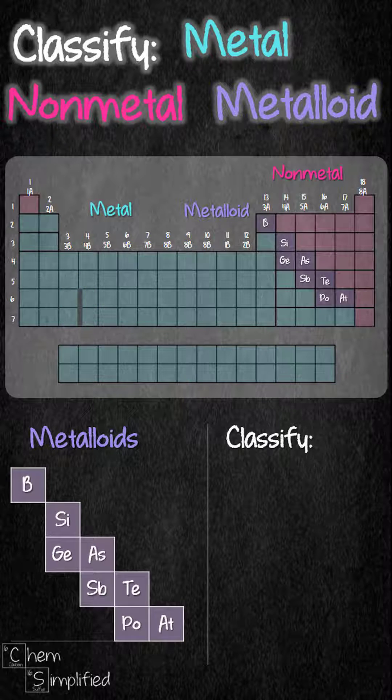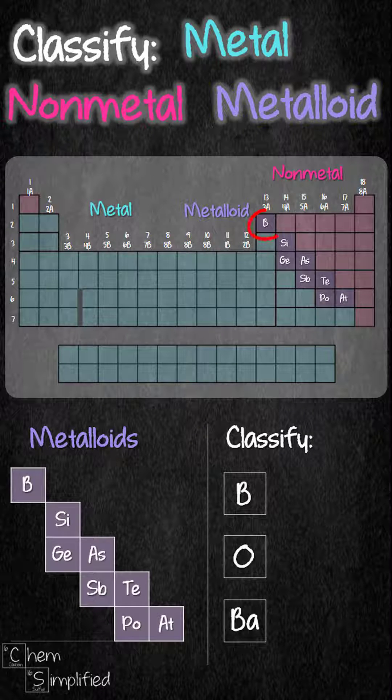Let's classify boron. B is located here in the periodic table. It's one of the metalloids.